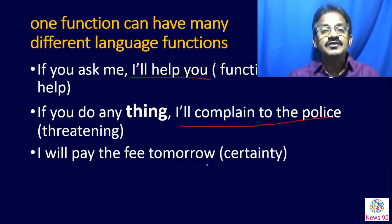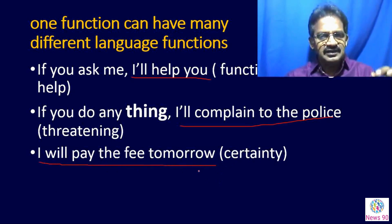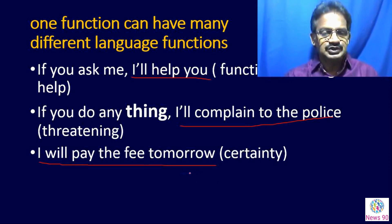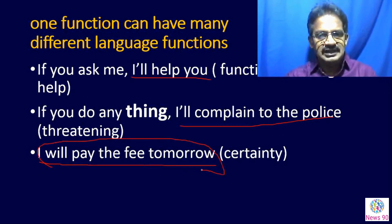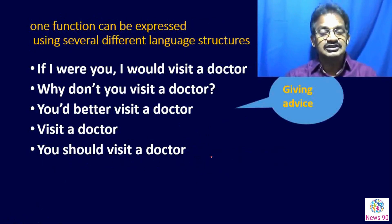Consider: 'I will pay the fee tomorrow.' This expresses certainty. So, looking at situation and function — a sentence can be observed in context. All these three sentences are grammatically correct, but according to the situation, the meaning may change. This is what we call the function of the language. One function can be expressed using several different language structures.